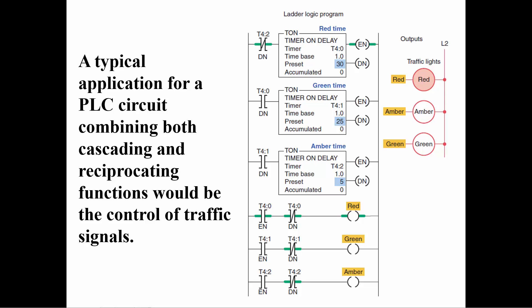This ladder logic program is designed to control the red, amber, and green lights of a traffic signal for traffic in one direction. The program uses three TON timer instructions in a cascaded and reciprocating arrangement. When the program first starts, all of the done bits will be zero. The examine-if-open T4:2/DN instruction on the first rung will be true and timer T4:0 will start timing.